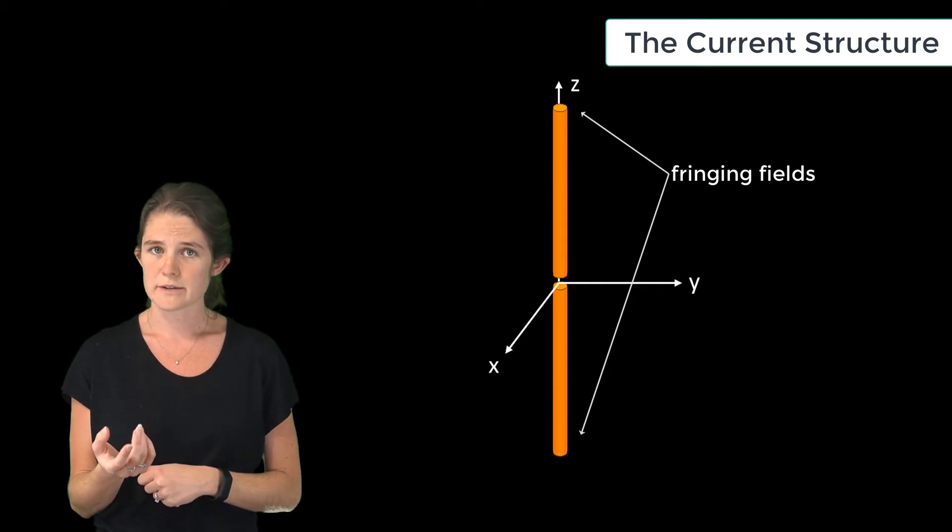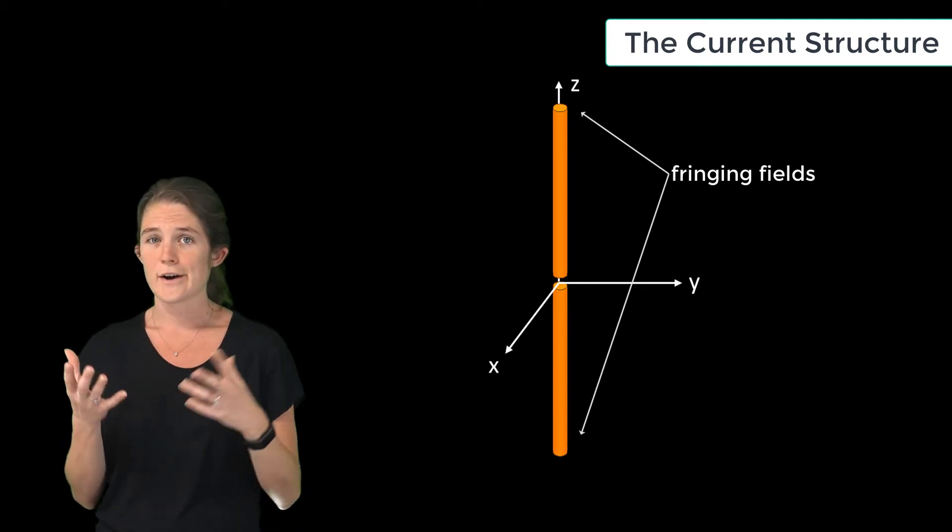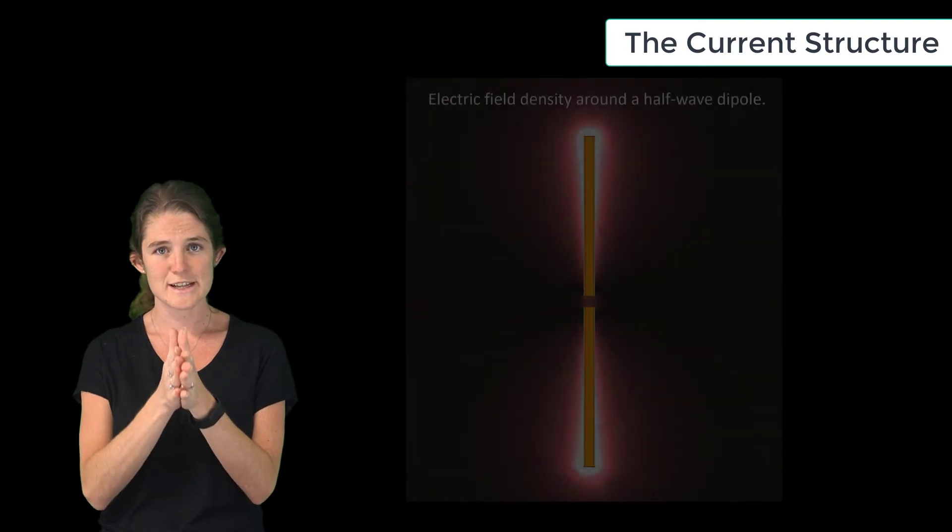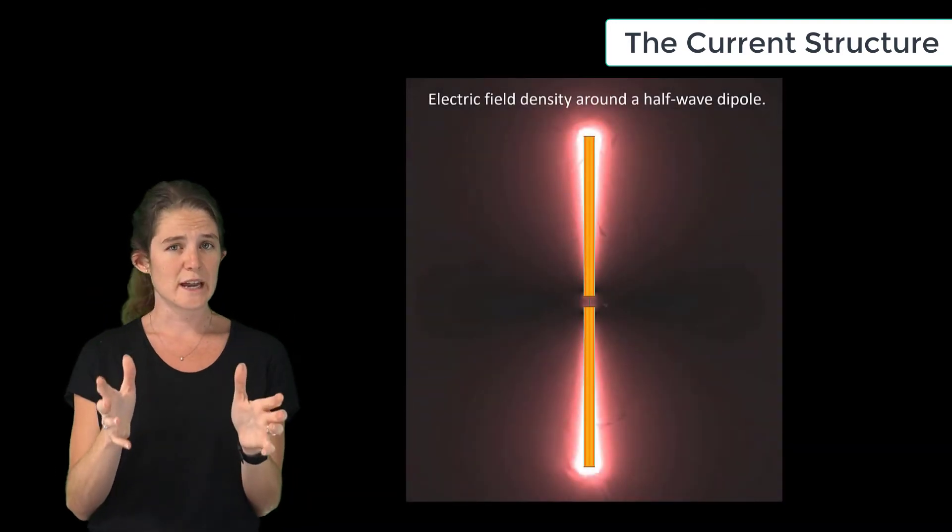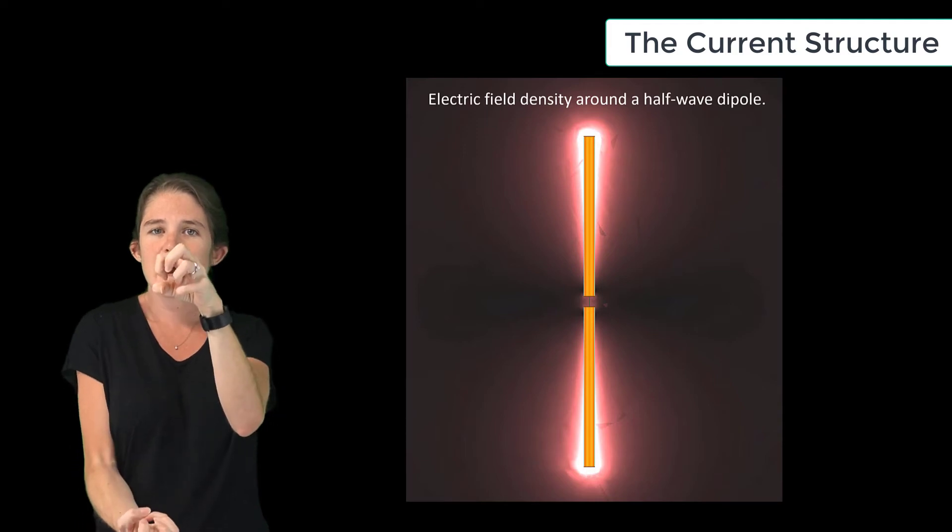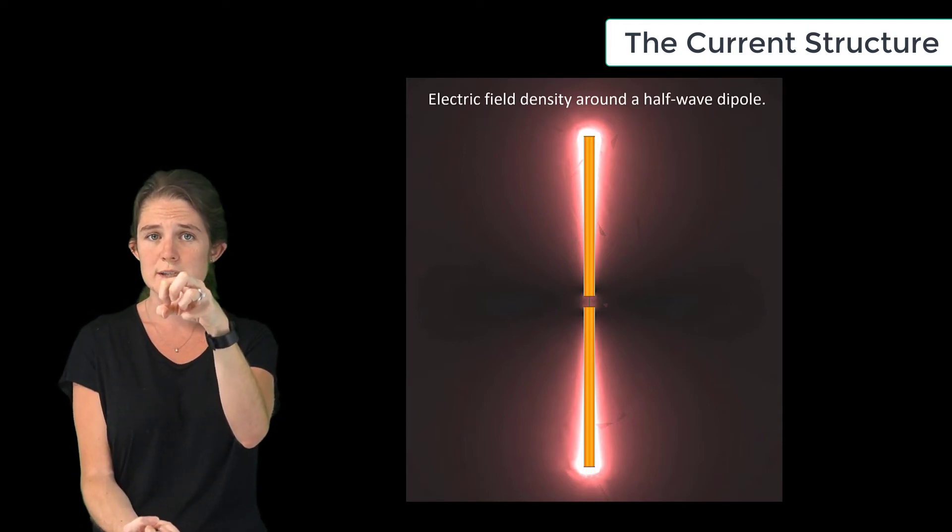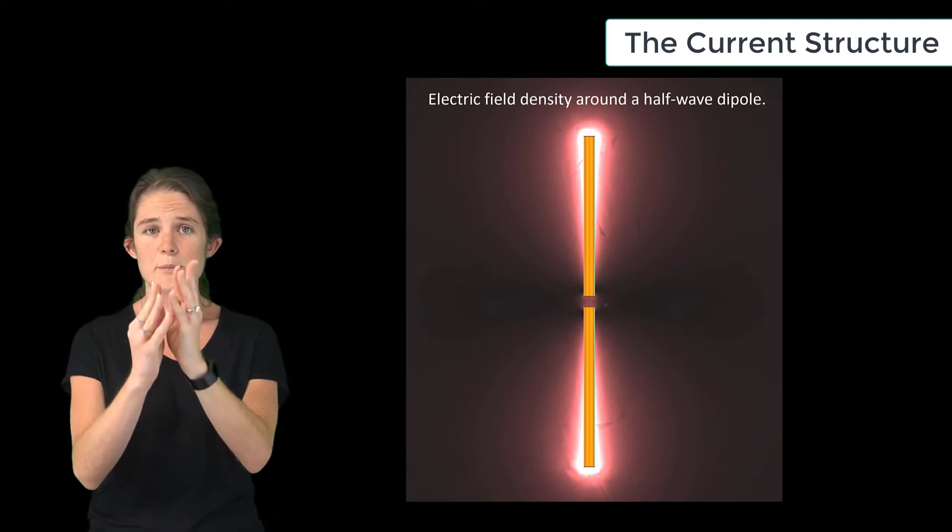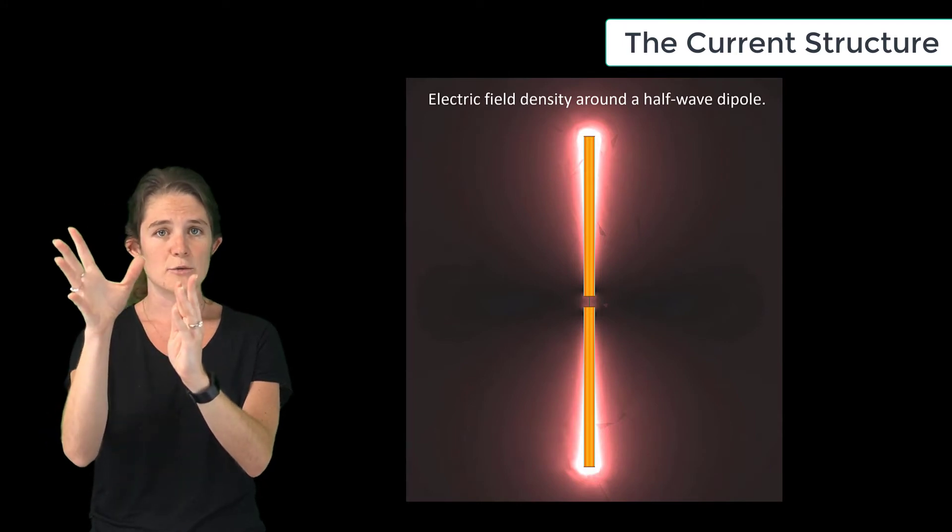Now what are fringing fields? It turns out because of the abrupt truncation of the current path at either end of the dipole, you end up getting very high charge concentration at those points, because the current flows into that point for half the cycle but has no path by which to flow out until the cycle goes back the other way.